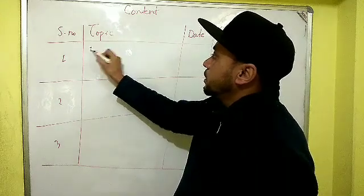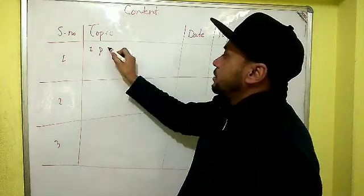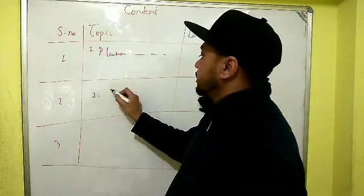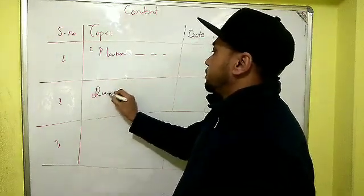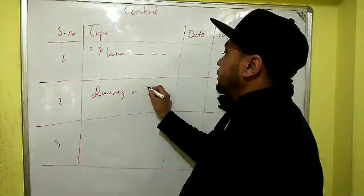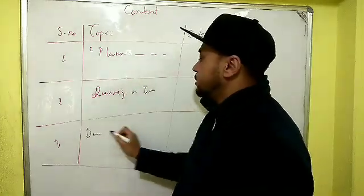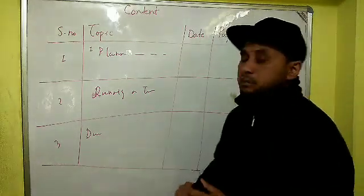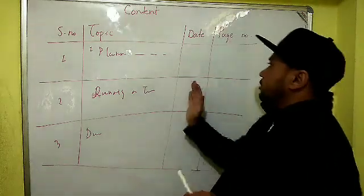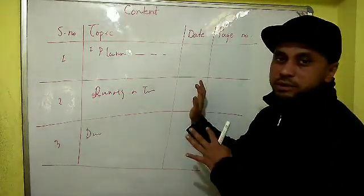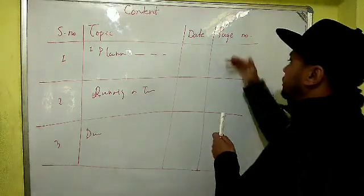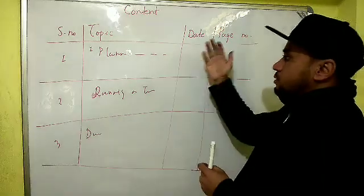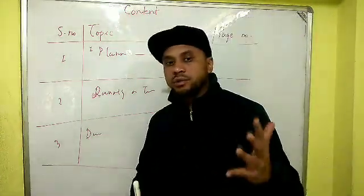Then you write the topic. Topic one will be planning the delivery route of a postman, number two is running a tuck shop or canteen, and three is draw a circle. Whatever topic is given to you, that is what you write. The third column is the date — leave this section, we'll fill it in afterwards.